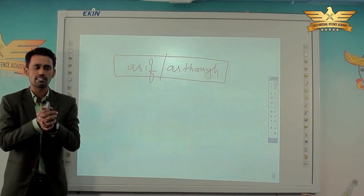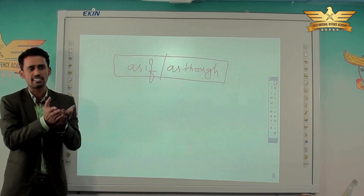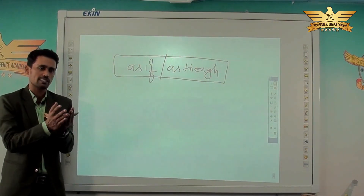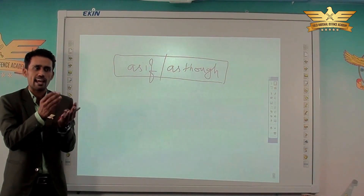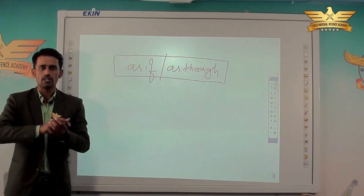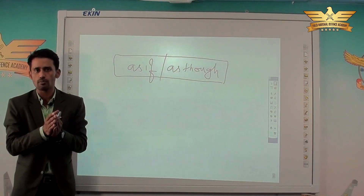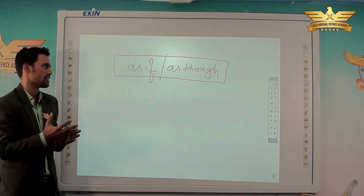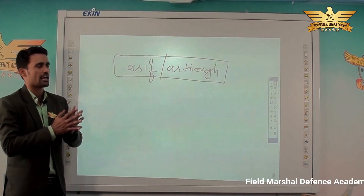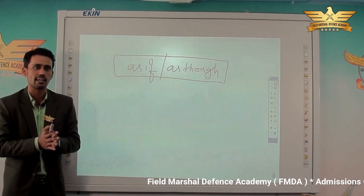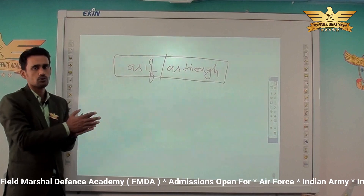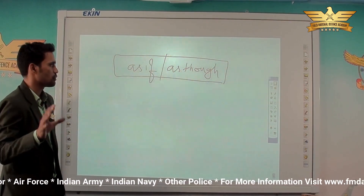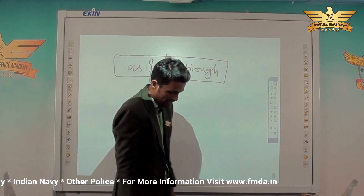For example, 'Mohan reacts like that' or 'Riya has acted like that he is an engineer.' This type of sentence is called a suppositional sentence — there is no reality in it. We use 'as if' or 'as though' in suppositional sentences.